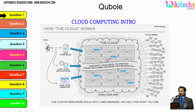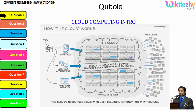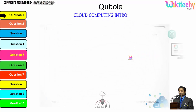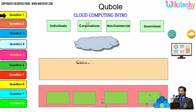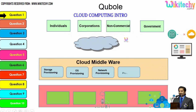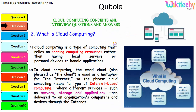I can load files, applications, or my website onto the cloud so any user can access it, and tracking or monitoring becomes really easy. There are different types of users — individuals, corporations, non-commercial users, and government — and all of them can access services, storage, networks, or operating systems via cloud middleware. Middleware is specialized software provided by the cloud service provider to allow end users to access resources. This is how the cloud computing architecture works.